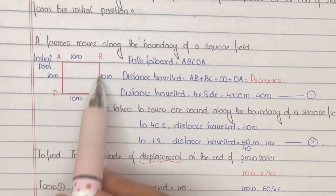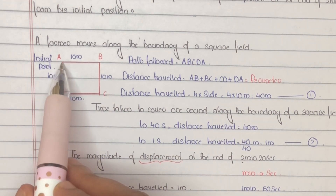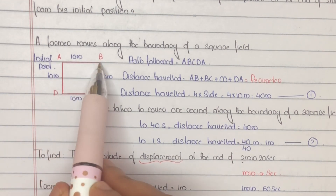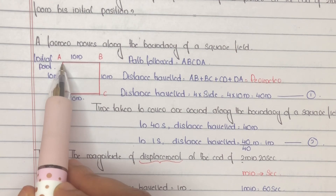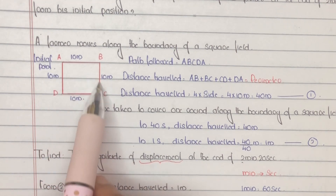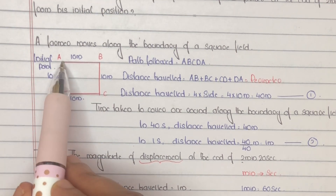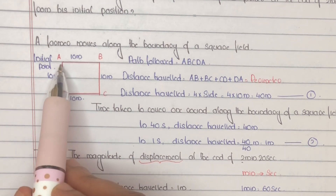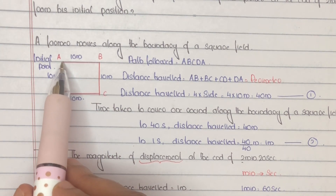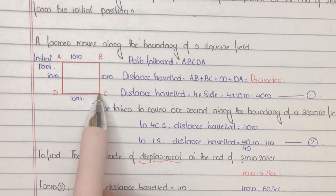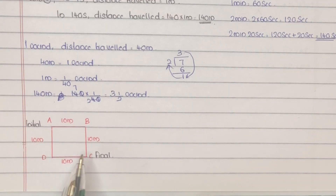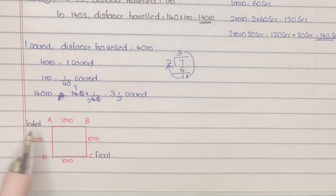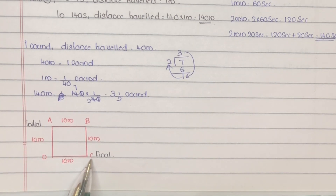In the given time period, the farmer covers 3 and a half rounds. Starting from A: round 1 is A→B→C→D→A, round 2 is A→B→C→D→A, round 3 is A→B→C→D→A, then half a round more: A→B→C. So the final point is C. After completing 3 and a half rounds starting from A, the initial point is A and the final point is C.